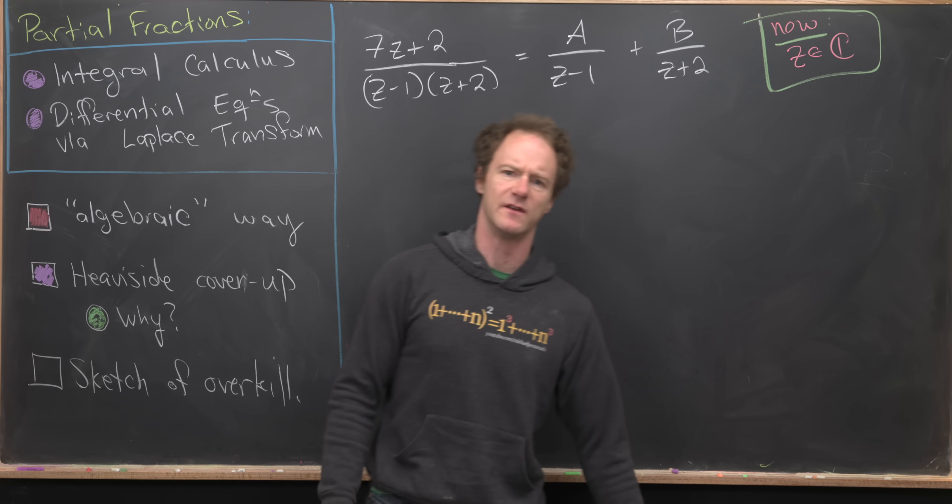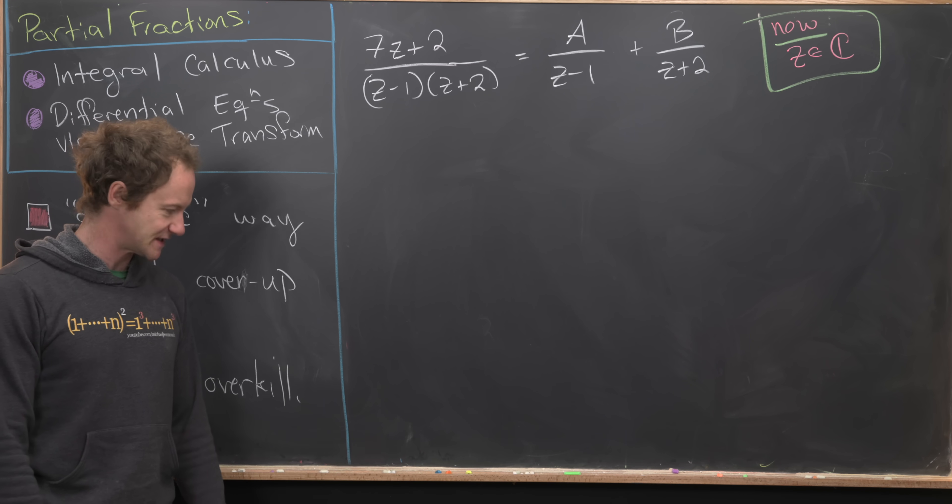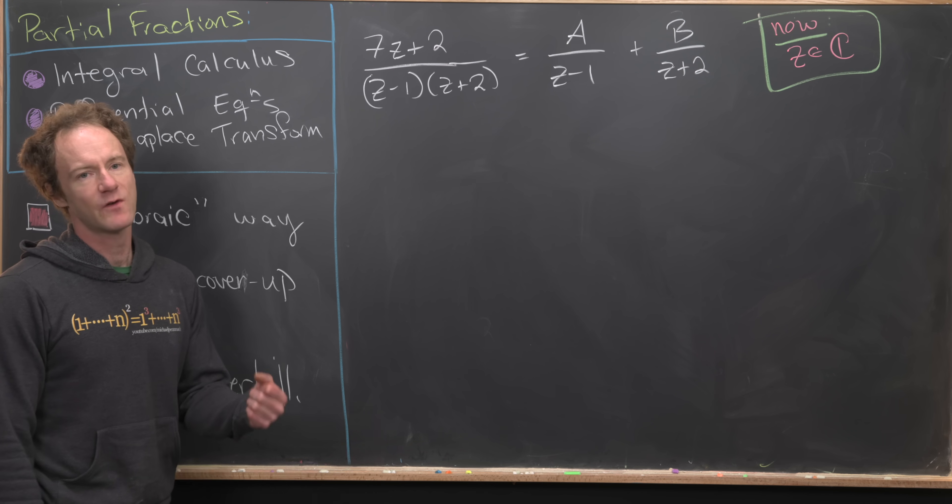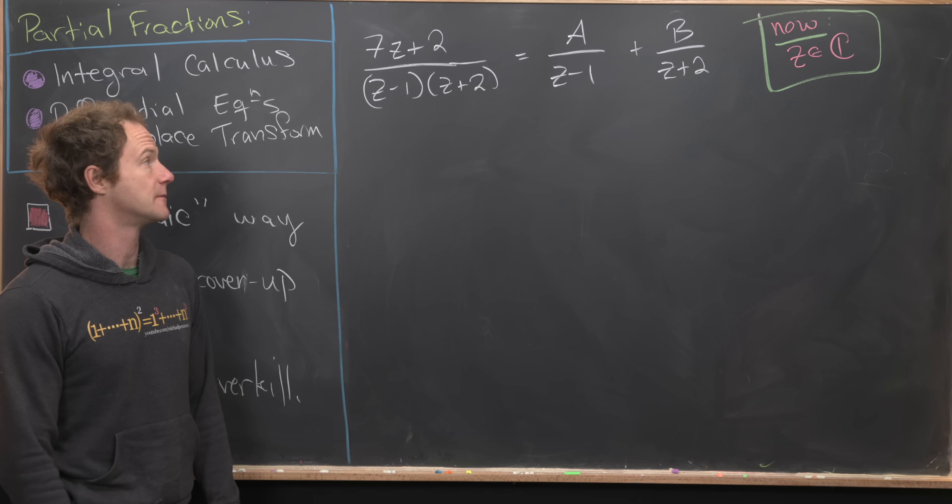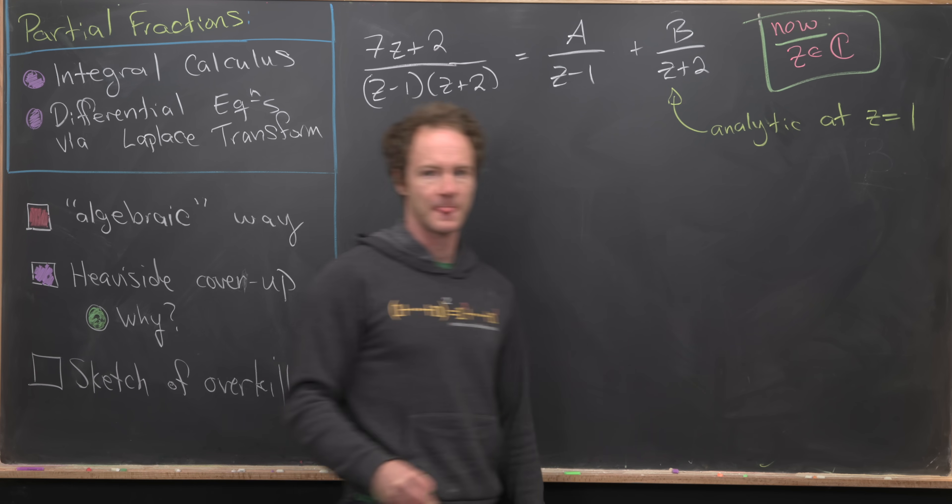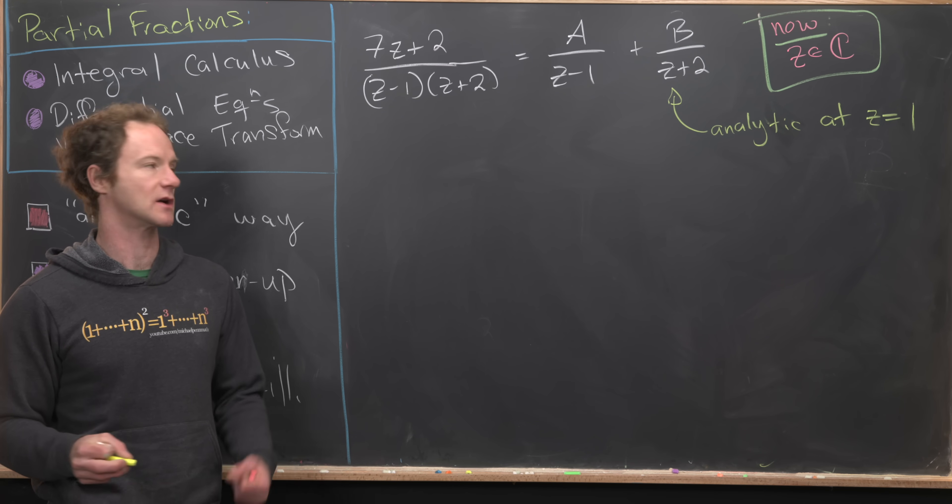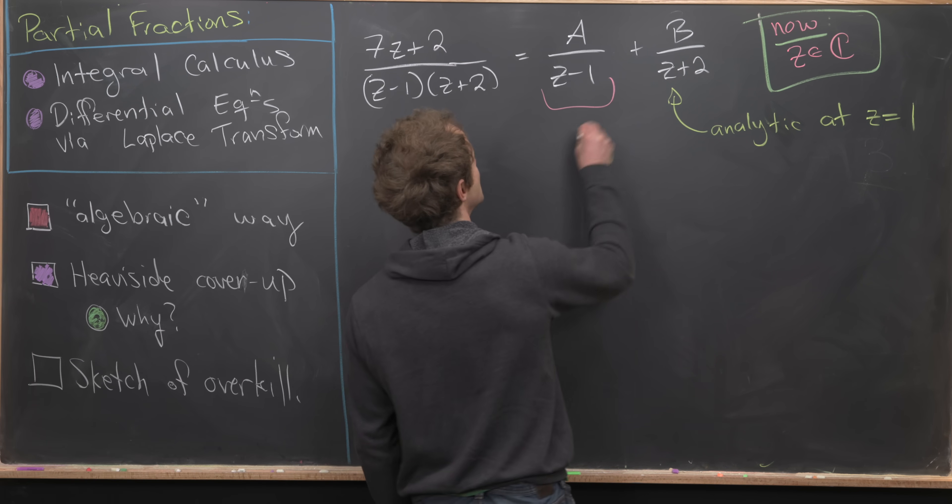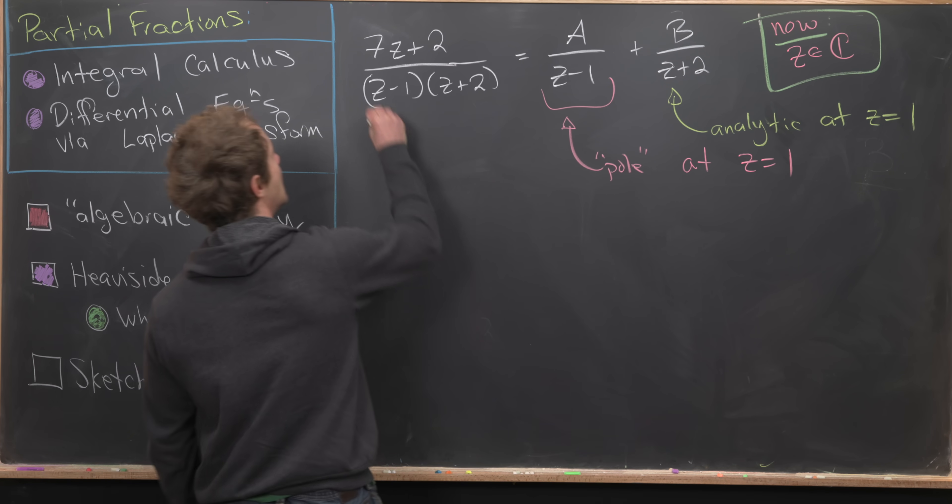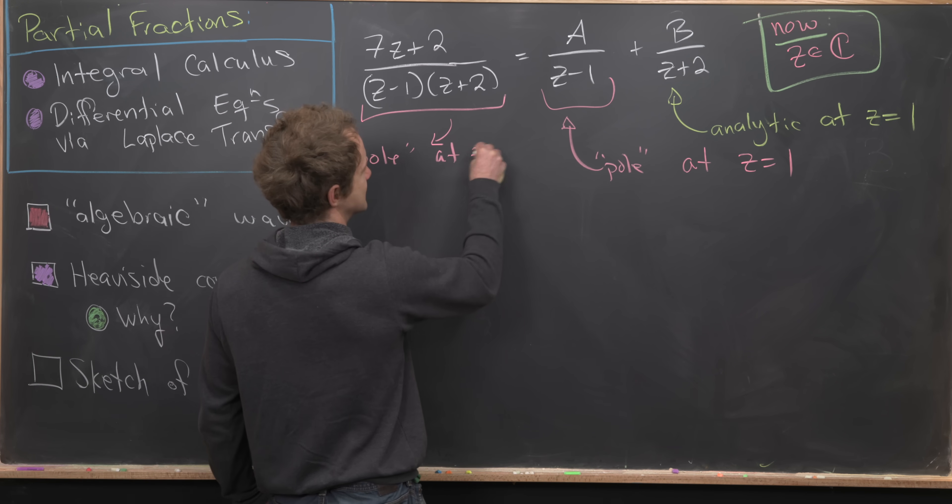Now we're going to look at a bit of an overkill method for finding this decomposition. I've changed all my x's for z's because now we're thinking about this as happening with a complex variable. I'm going to focus on the z equals 1 spot. This thing is analytic at z equals 1, which is essentially a souped-up version of continuity happening on complex-valued functions. Whereas this one has something called a pole, a pole of order 1 at z equals 1. Our starting rational function also has a pole of order 1 at z equals 1.